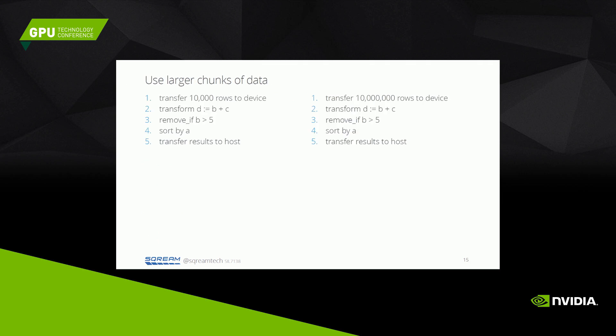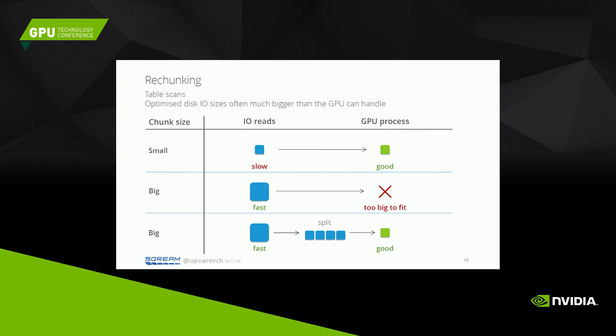Another idea is to use larger chunks of data. For instance, if we need to do an external sort, we break the data into chunks, sort each chunk on the GPU, and then do a merge phase. If we load a small amount of data each time, the query takes longer. If we load as much as possible on the GPU in each initial sort step, we run a lot faster. Typically, we want to make chunks as big as possible to just fit on the GPU for the best performance.